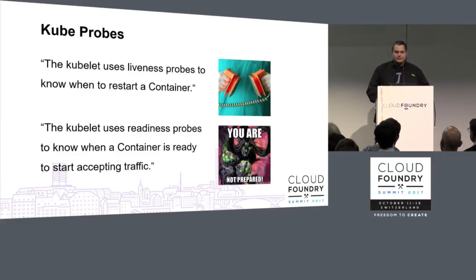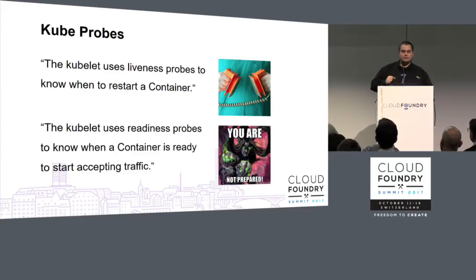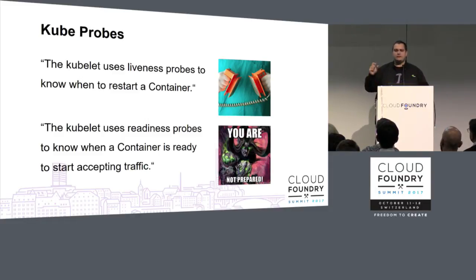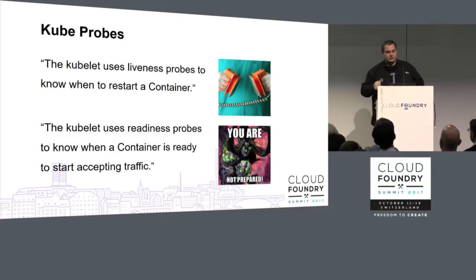Now we have probes. There are two types. There's a liveness probe that basically detects when a container is running or not running — if something bad has happened, the liveness probe detects it and Kubernetes restarts the pod. Since we automatically generate these configurations, in almost all cases we use Monit to figure out if something is wrong inside the container. If you look inside a container it's basically the same as a BOSH VM — you'll find Monit there, you'll find var/vcap directories — and we use Monit to tell if the container is okay and alive.